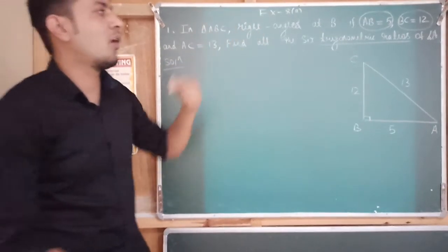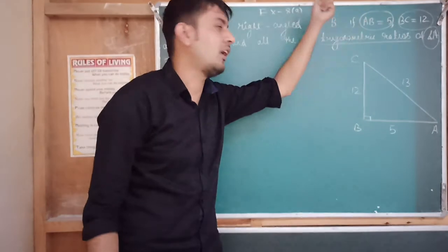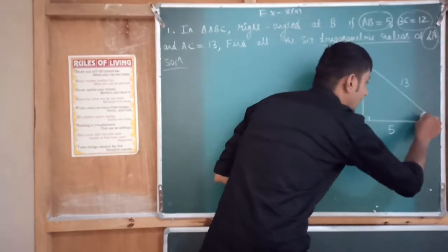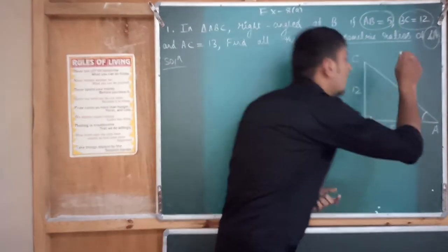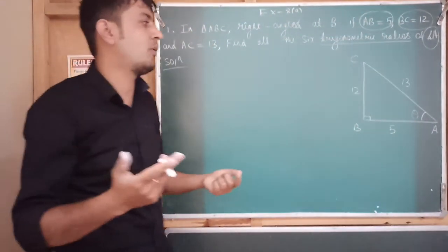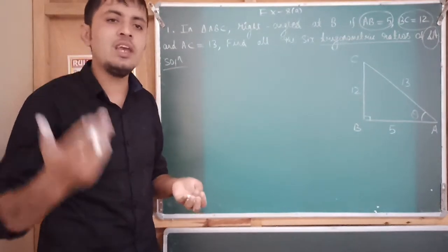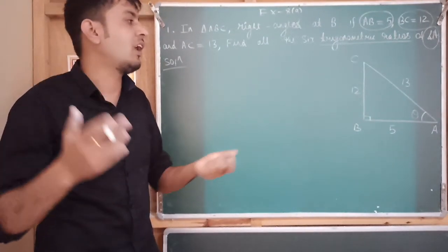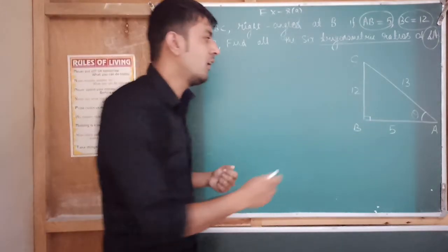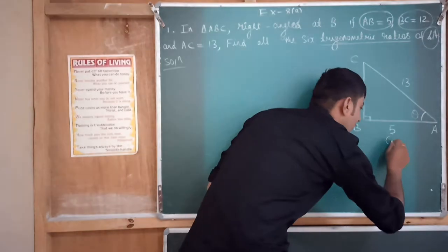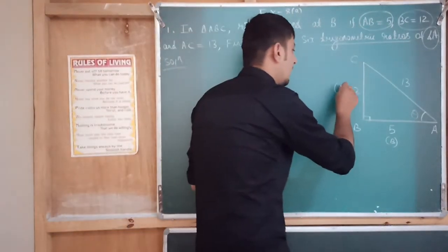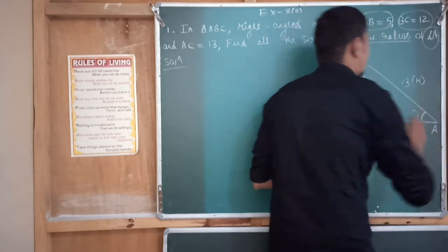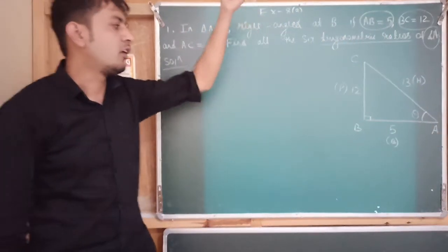They have asked us to find out all six trigonometric ratios of angle A. So mark this angle A — when you mark angle A, your theta is here. In the last video I gave you the concept of how to identify your base, hypotenuse, and perpendicular in a right-angle triangle. When you mark theta here, this will become your base, this will become your perpendicular, and this will become your hypotenuse.